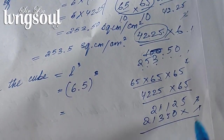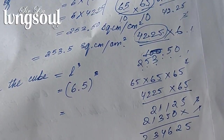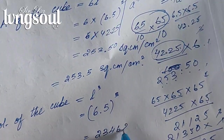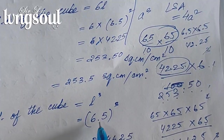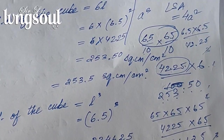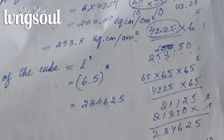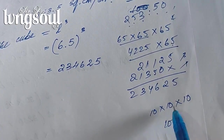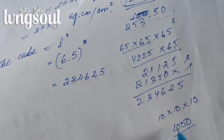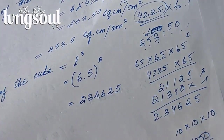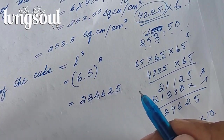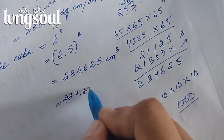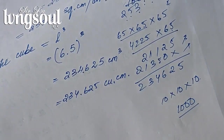Calculating 42.25 times 6.5: the result is 274.625 cubic centimeters. So the volume of the cube is 274.625 cm cubed.